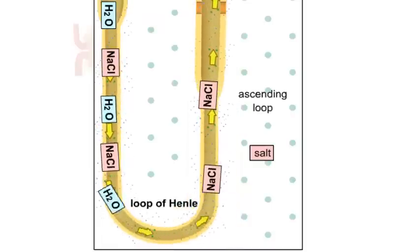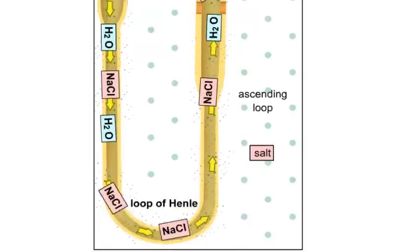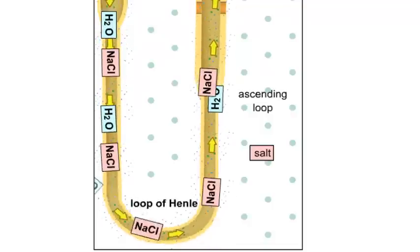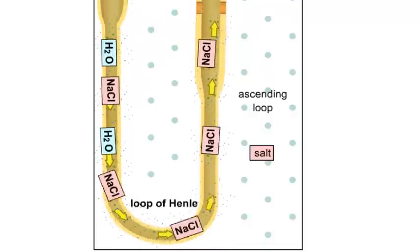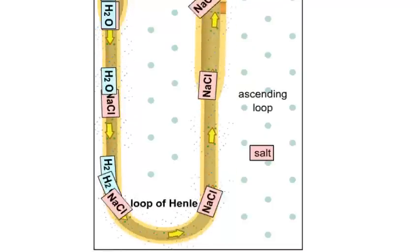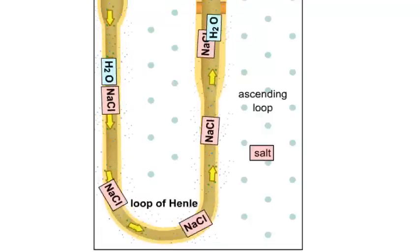As the concentrated filtrate reaches the thin ascending portion and the thick ascending portion of the loop of Henle, it becomes impermeable to water and permeable to salt. Due to the loss of water in the descending loop, salt is now very concentrated in the filtrate. While moving up the ascending loop, the salt begins to move down its concentration gradient and diffuses into the surrounding fluid of the renal medulla.